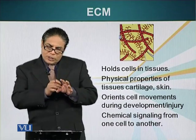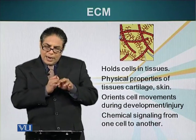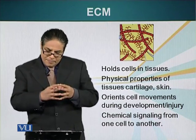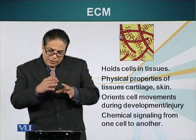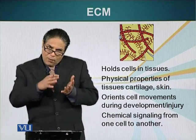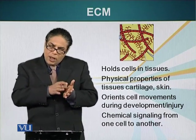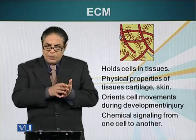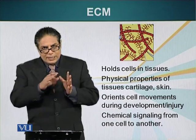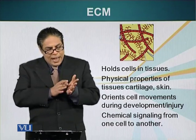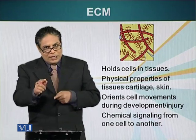For example, ECM holds the cells together. Our skin has a lot of collagen and it is holding the cells together. Also, extracellular material can serve as a road map or road along which cells can crawl. That is important during embryogenesis — cells need to go to a specific place and they use extracellular material to crawl on and reach their destination.